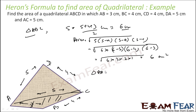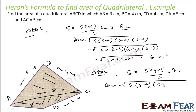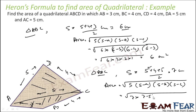Now for triangle ADC, S equals (5 plus 4 plus 5) divided by 2, which is 14 divided by 2, that is 7 centimetres. The area is root of 7 times (7 minus 5) times (7 minus 4) times (7 minus 5), which gives root of 7 times 2 times 3 times 2, that is 2 root 21, approximately 9.166 centimetre square.